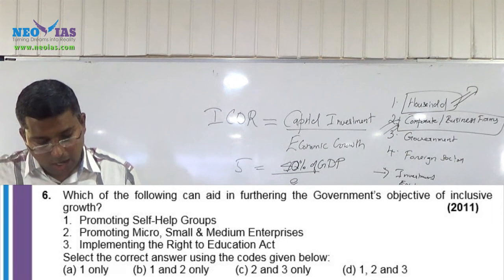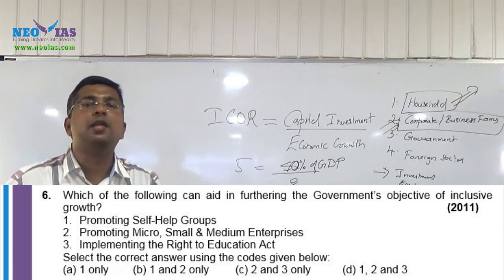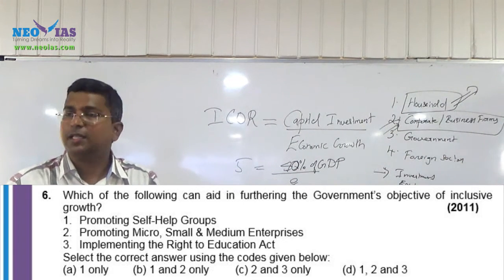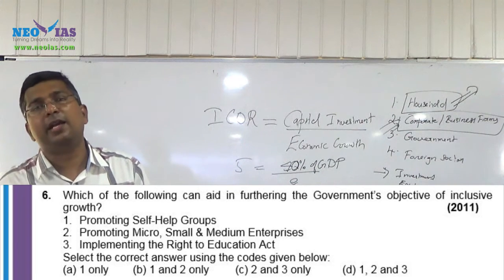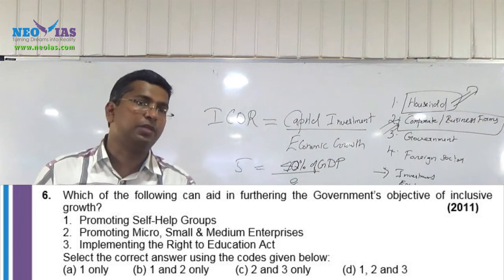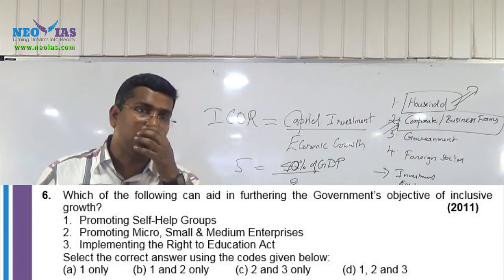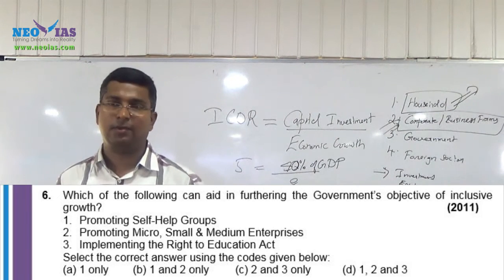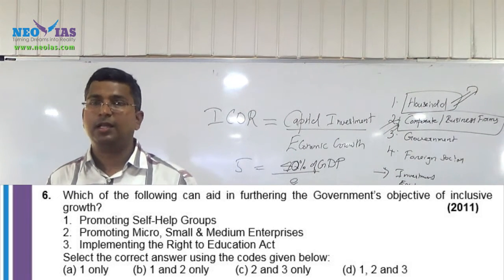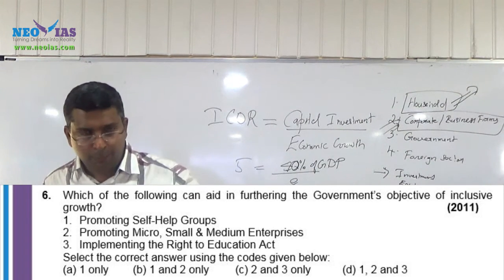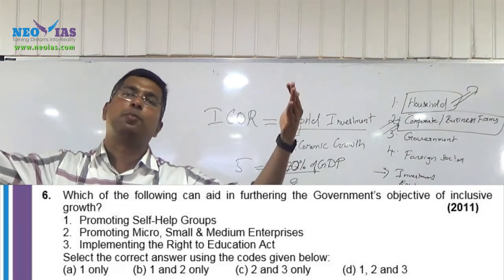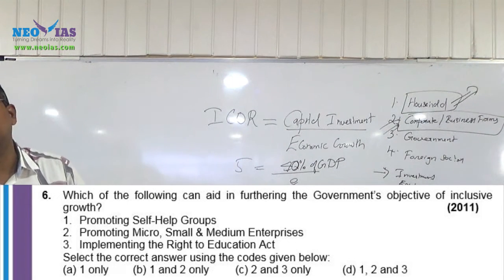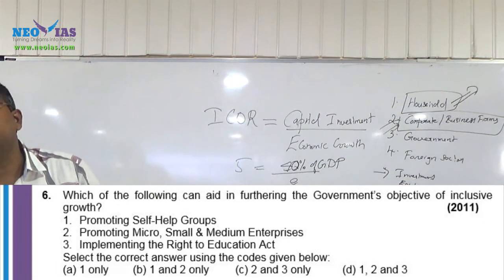Then promoting micro, small and medium enterprises. See, normally our earlier growth model was like that — the economic growth benefited only the upper section or the rich section. The rich people became more richer, poor people became more poorer, that's why we came up with this concept of inclusive growth.